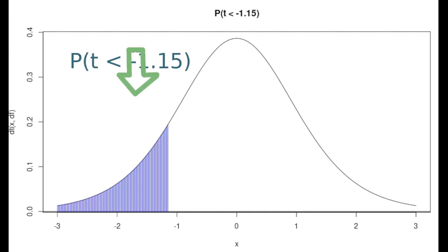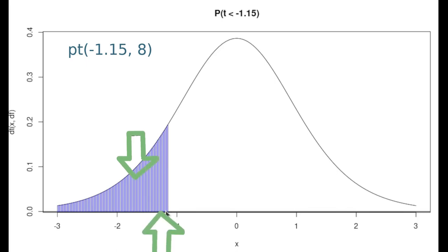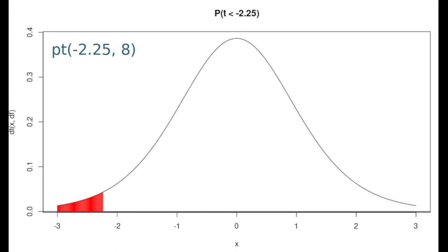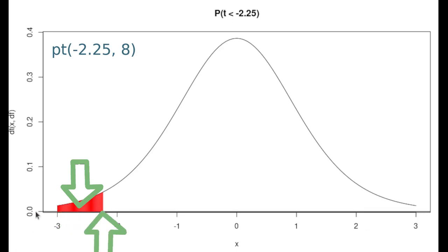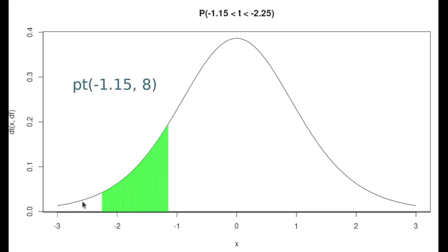The probability t function in R can calculate two different areas. One is the area below negative 1.15, and the other — pt of negative 2.25 — tells the area below negative 2.25. So our desired area, that green area, is found by taking the area below negative 1.15 and subtracting the area below negative 2.25.